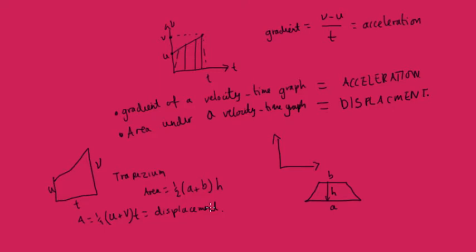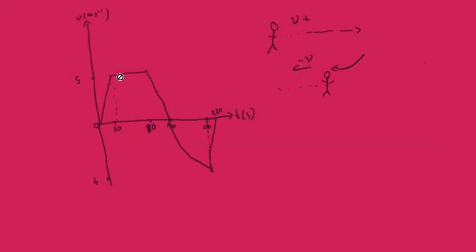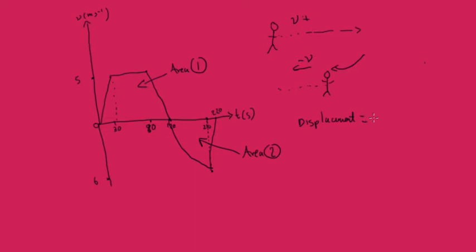If we go back and look at the velocity-time graph of our athlete, the area — area one — and this area — area two — the total displacement is going to be zero. So area one plus area two equals zero, because area one is a positive displacement and area two is a negative displacement, and they add together to be zero because the athlete returns to their original point.